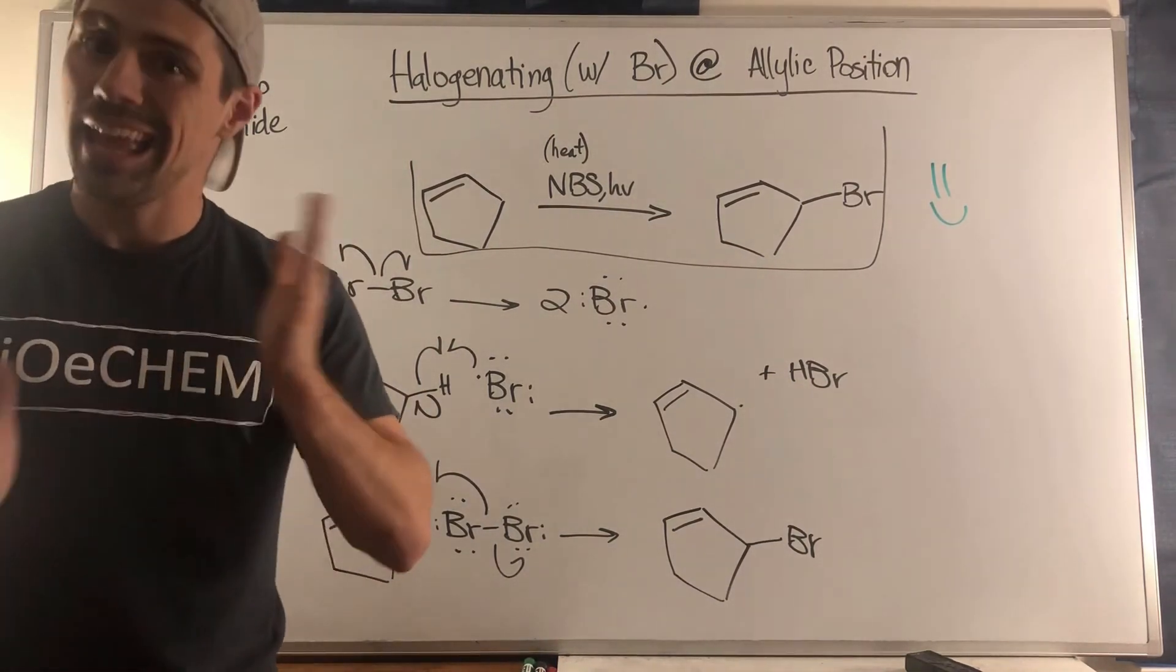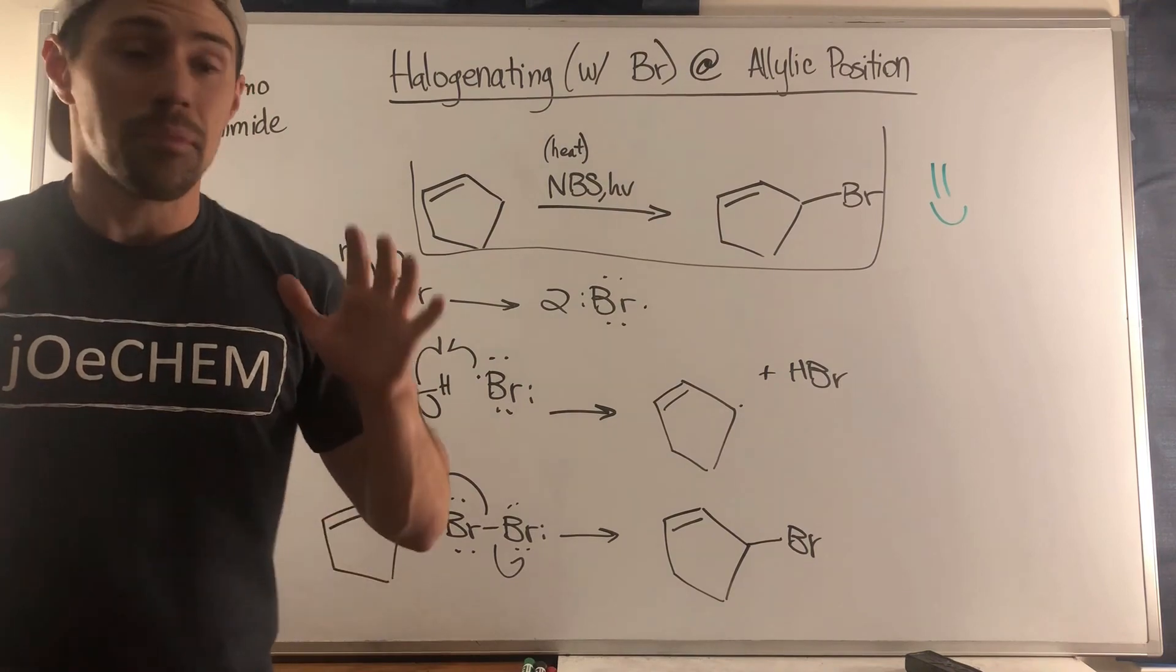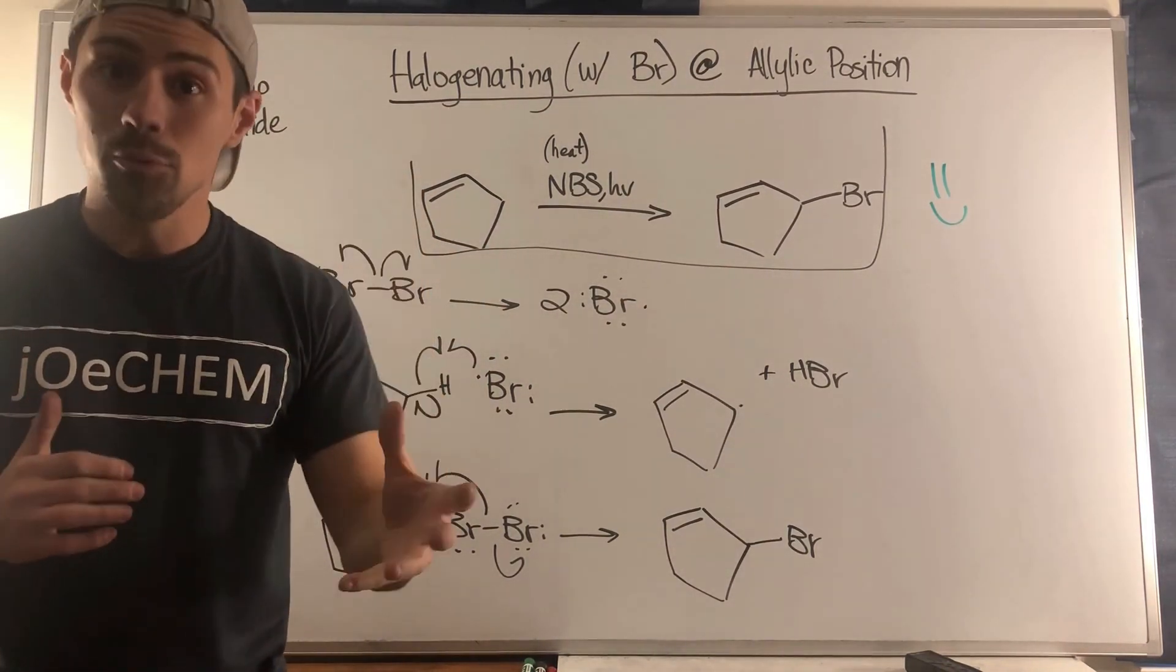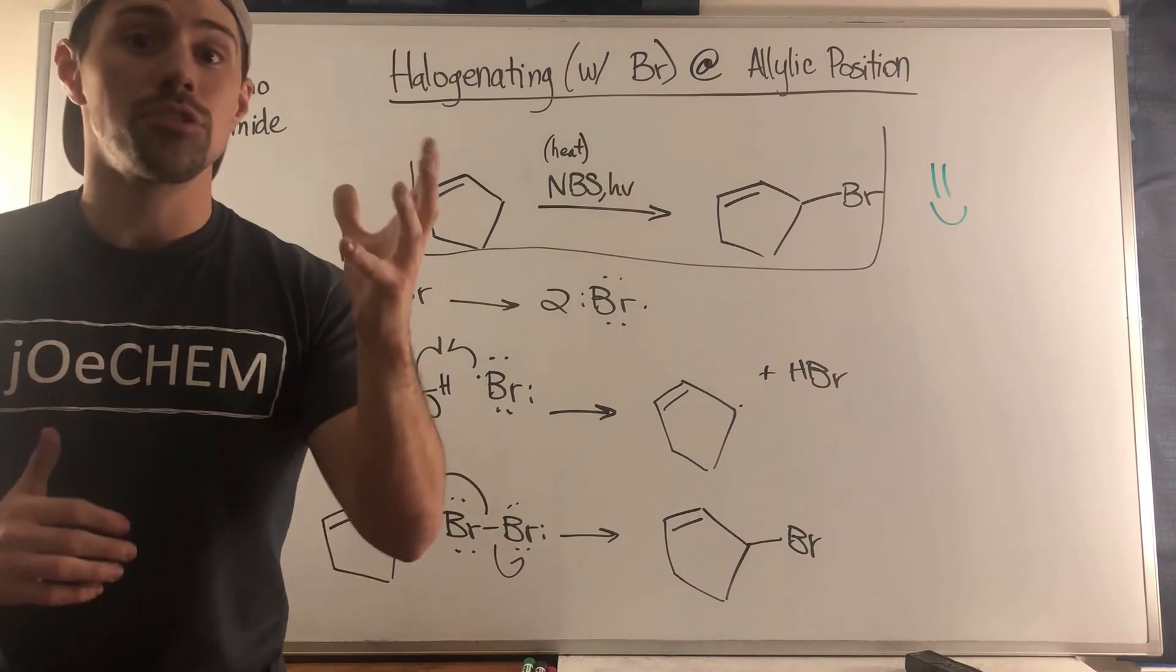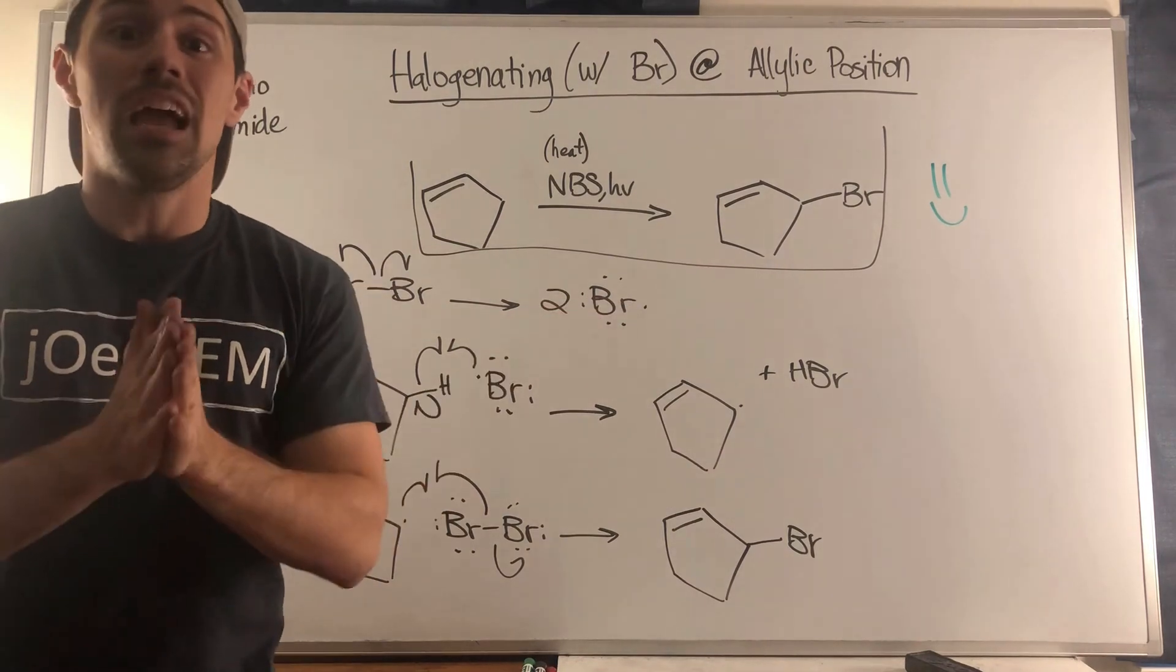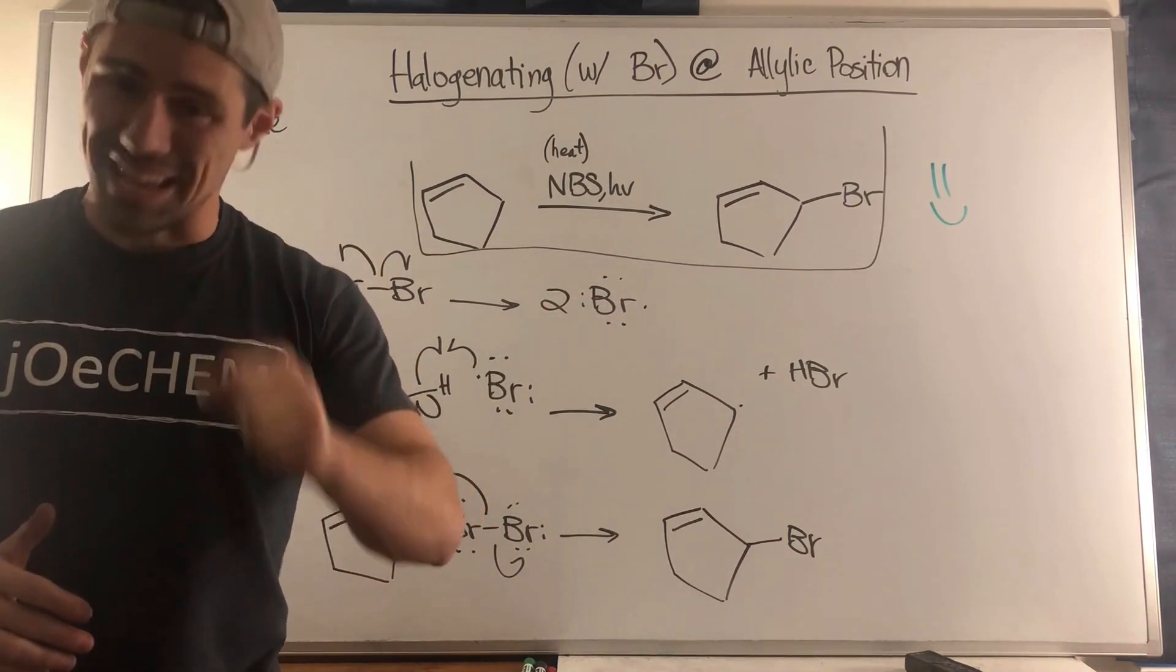Okay gang, that does it for halogenating at the allylic position with bromine and NBS. Thank you so much for watching. I hope if you feel like liking and commenting or subscribing please do. If anything, I will see you all in the next video.